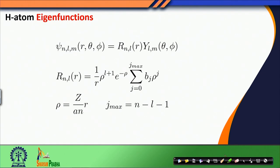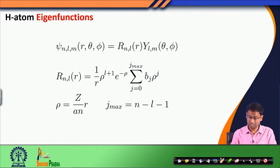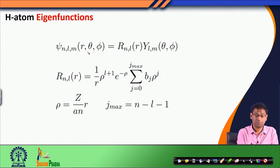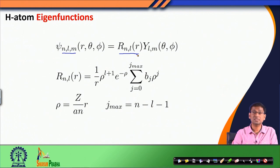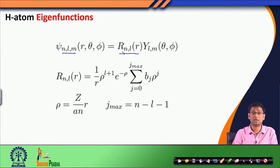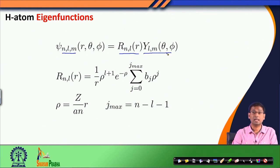Today we will discuss the hydrogen atom's eigenfunctions. To remind you, the eigenfunctions of the hydrogen atom are expressed as ψ as a function of r, θ, and φ, with indices n, l, and m. The total wave function is given by two parts: a radial function depending on n and l, and an angular function depending on l and m.